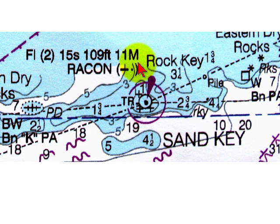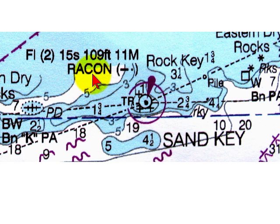This distance of visibility, known as nominal range, does not take into account the curvature of the earth or atmospheric conditions such as fog or haze. This light also carries a special radar transponder beacon, abbreviated Racon, which will show a Morse code symbol on your radar.